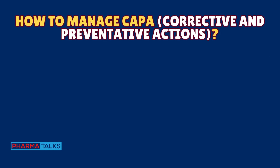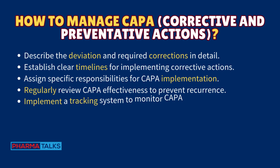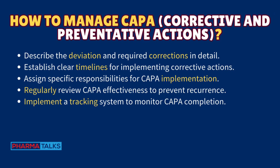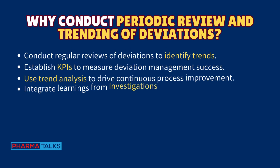To manage CAPA — corrective and preventative actions — describe the deviation and required corrections in detail. Establish clear timelines for implementing corrective actions and assign specific responsibilities for CAPA implementation. Regularly review CAPA effectiveness to prevent recurrence, and implement a tracking system to monitor CAPA completion.